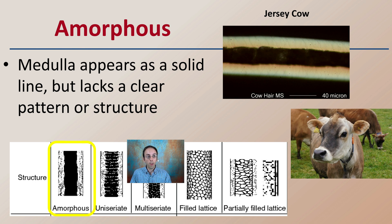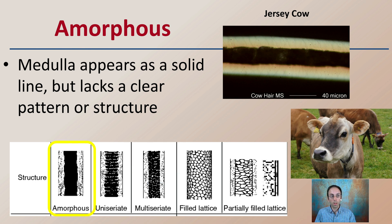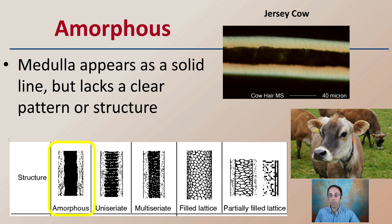Starting with the amorphous shape — it appears as a solid line but lacks a clear pattern or structure. Looking at a Jersey cow's hair sample at 40 microns, this is an example of this amorphous shape.